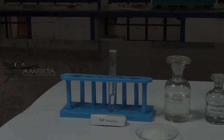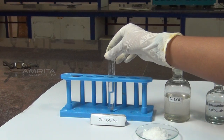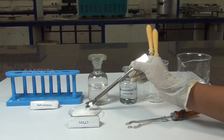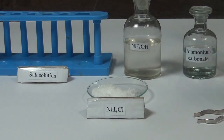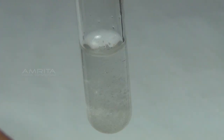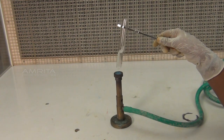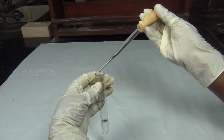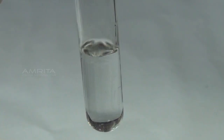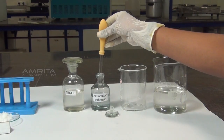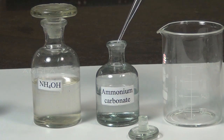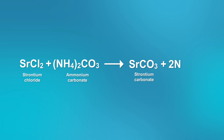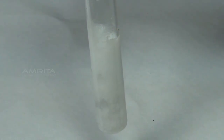Procedure: take a small quantity of salt solution in a test tube. To this, add a small amount of ammonium chloride using a spatula. Heat the test tube over the Bunsen burner and cool. Using a dropper, add ammonium hydroxide to the test tube till the solution smells of ammonia. To this, add ammonium carbonate solution using another dropper. Strontium ions in the solution react with ammonium carbonate to form a white precipitate of strontium carbonate.